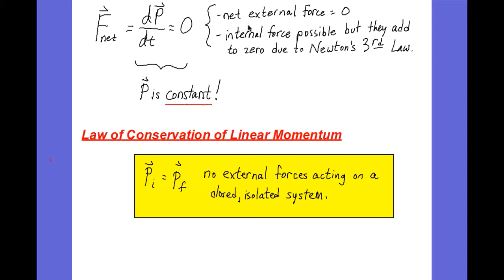This is only when the net external force is equal to zero. There can be internal forces present, but because they're internal forces, they come in pairs and we always have an action-reaction pair. When we have a force acting in one direction, we know we have the reaction force acting with the same magnitude but in the opposite direction. So the internal forces will add to zero as well.